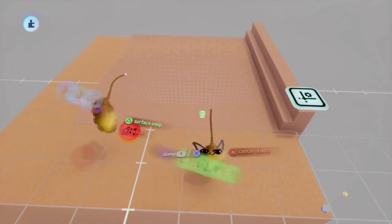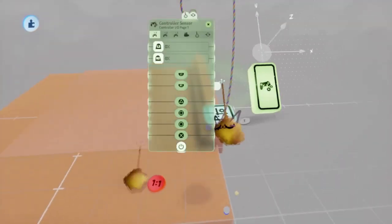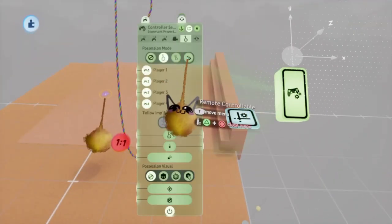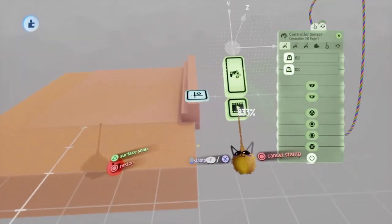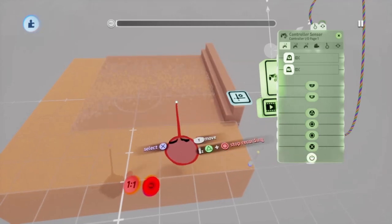Place a control sensor gadget and select remote controllable. Place an action recorder down and with grid mode off, record a wiggle.